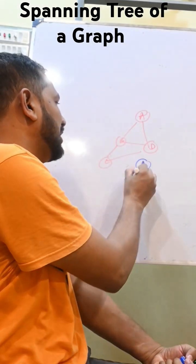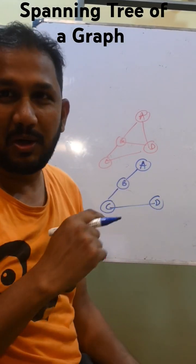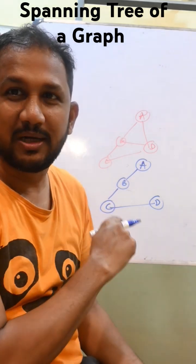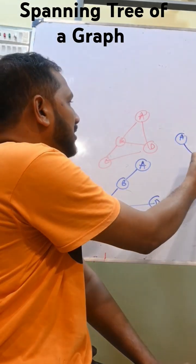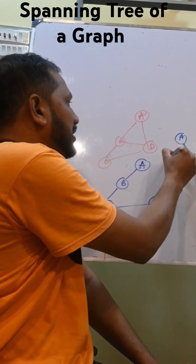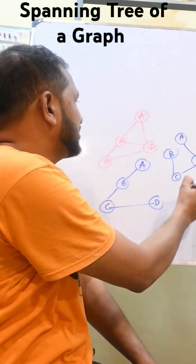This is called a spanning tree. Again, we can consider a, d, c, b. So this is again a spanning tree from the same graph.